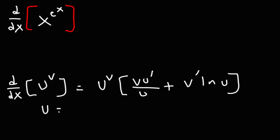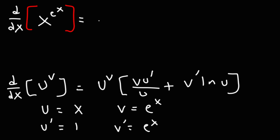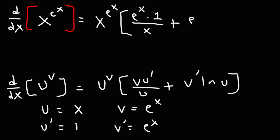Now for this one, let's define u as x, and v as the exponent, e to the x. So u prime is going to be 1. The derivative of e to the x is just e to the x, so that's v prime. So u raised to the v is the original problem, then v times u prime: v is e to the x, u prime is 1, over u, which is x, plus v prime, which is e to the x, times ln u, so that's ln x.